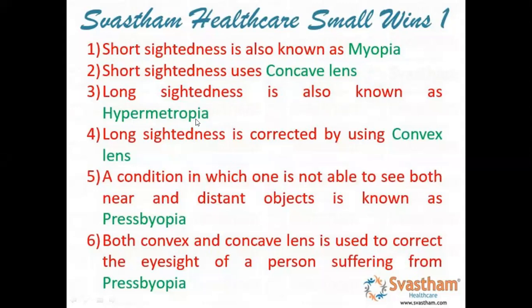Long-sightedness is also known as hypermetropia. Here the patient can see long distances but may not be able to see nearby objects. In order to correct this, we use a convex lens.